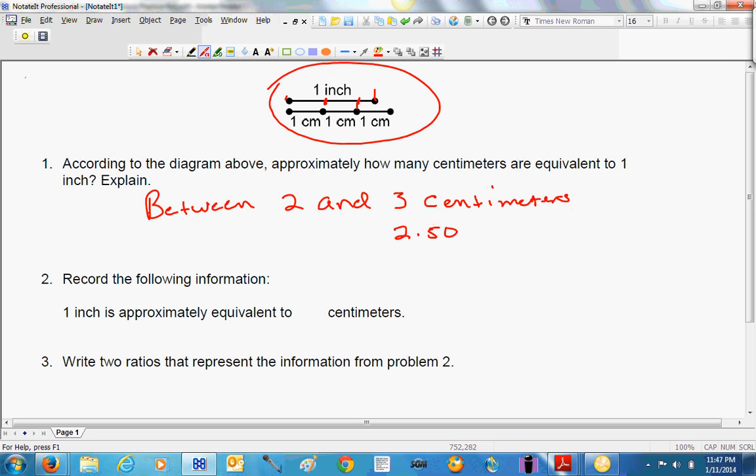Okay. So, problem two says record the following information. And again, we are looking at what we see here. So, one inch is approximately equivalent to, let's say, two point five four centimeters.